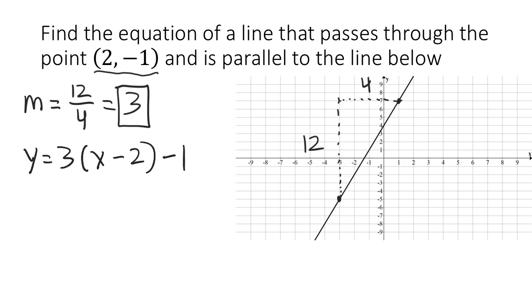From here, we can clean this up into the slope-intercept form by distributing the 3 inside the parentheses. If we do that, what we get is y equals 3 times x is 3x. 3 times negative 2 is negative 6 minus 1. y equals 3x minus 7.